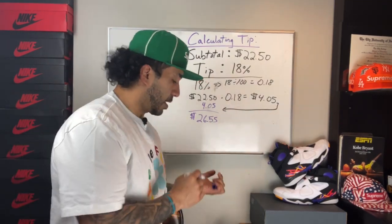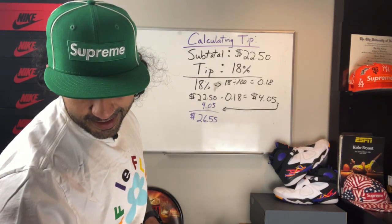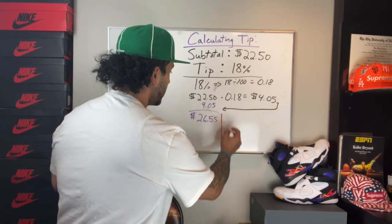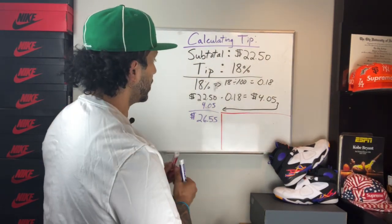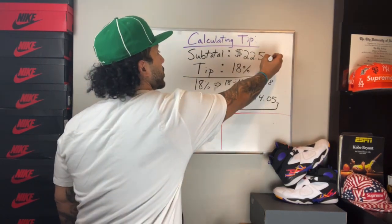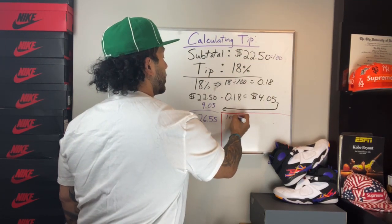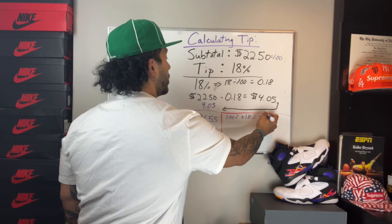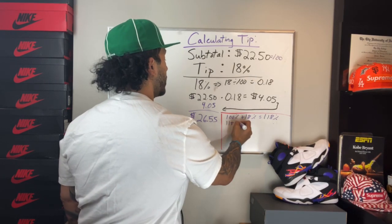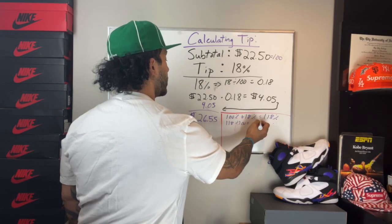Another way to do it is to ask yourself: the total is going to be one hundred and eighteen percent of the original price, because the original price is always one hundred percent. One hundred percent plus eighteen percent equals one hundred and eighteen percent — that's what you're looking to pay at the end. Take one hundred and eighteen divided by one hundred, which gives us one point one eight.